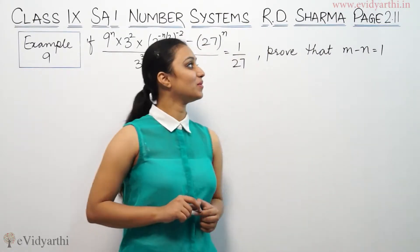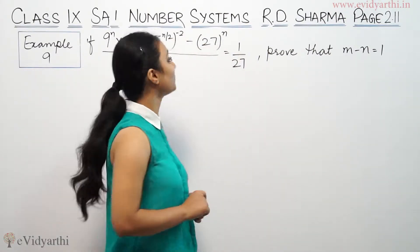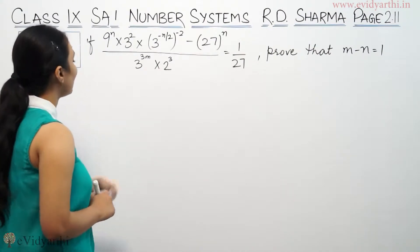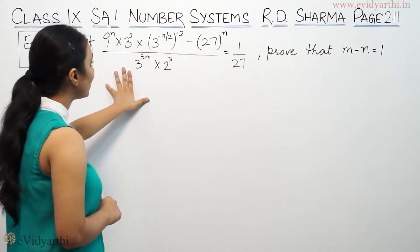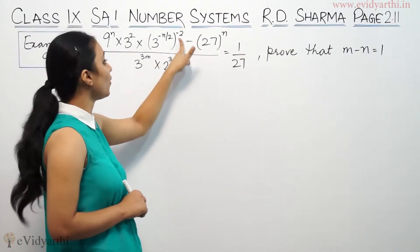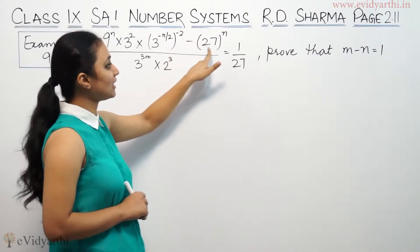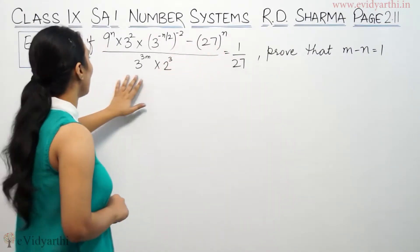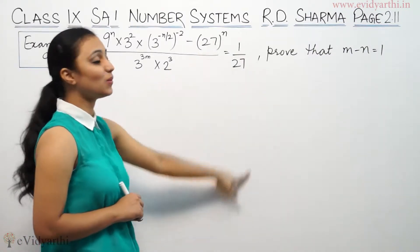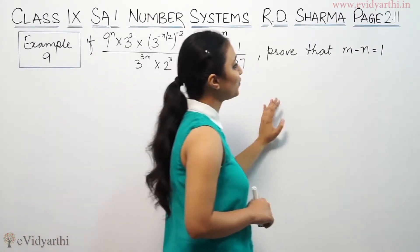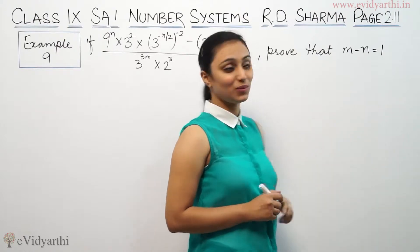This is example number 9 from page 2.11 from R.D. Sharma. It says that 9^n × 3² × 3^(-n/2) × 4^(-2) minus 27^n upon 3^(3m) × 2³ equals 1/27. We have to prove that m minus n is equal to 1.